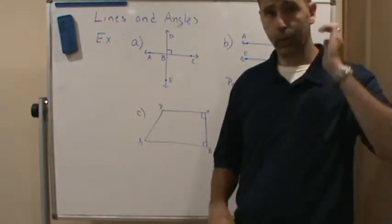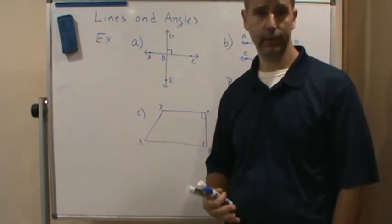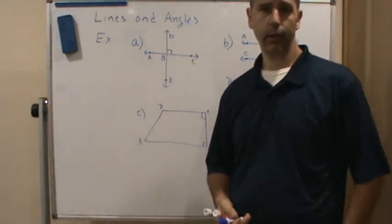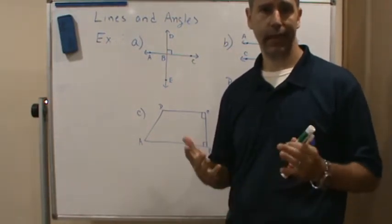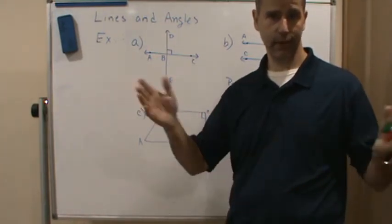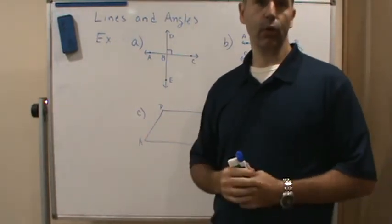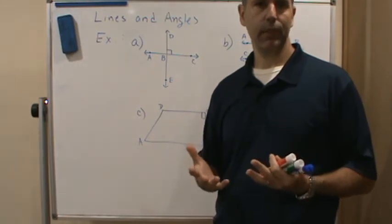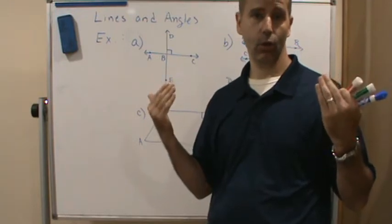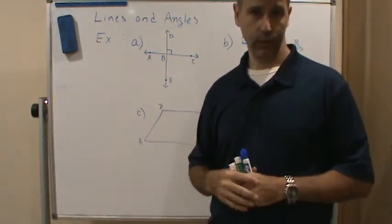In this video I want to talk about two types of lines: perpendicular lines and parallel lines. Parallel lines are any lines that never intersect. A line goes in both directions to infinity, so when we say two lines are parallel, that means they will never intersect no matter how far we extend the line in either direction.